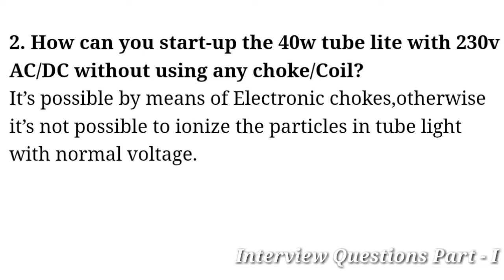Without a conventional choke or coil, we can start a 40-watt tube light using an electronic choke. Otherwise it is not possible, because the ionization of particles in the tube light cannot occur with normal voltage alone. The fluorescence effect will not happen without a choke, coil, or electronic choke — ionization is simply not possible.